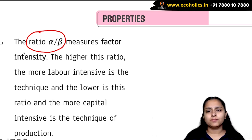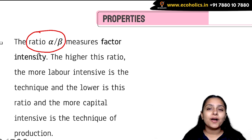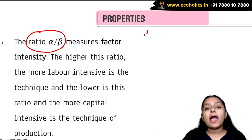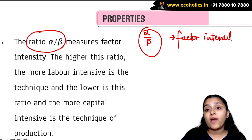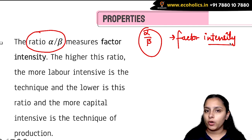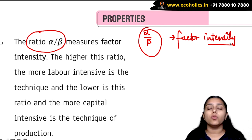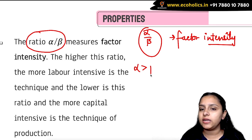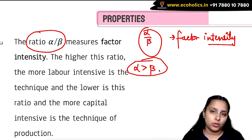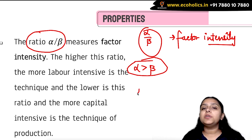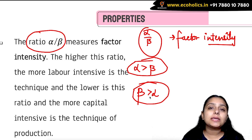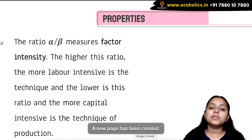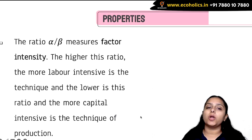Coming to the ratio alpha/beta, which tells us about factor intensity — the nature of the product, whether it is capital intensive or labor intensive. If alpha/beta is a higher ratio, meaning alpha is greater than beta, the product or output you are producing is labor intensive. If the alpha/beta ratio is smaller, meaning beta is greater than alpha, it represents that the product is capital intensive. This is another property of the Cobb-Douglas production function.